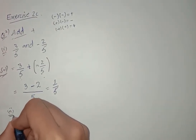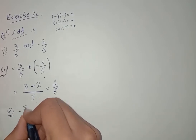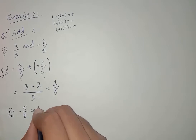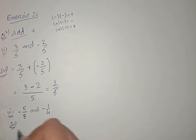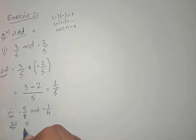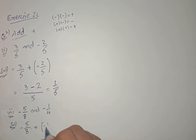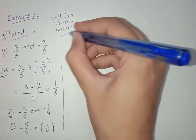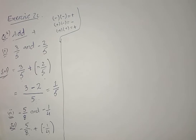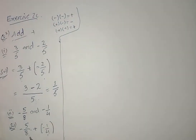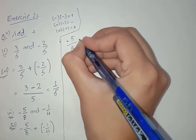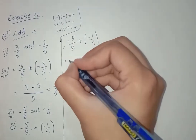Now move towards the next question, which is question number 2 part 2: minus 5 by 8 and minus 1 by 4. We have to add these. Minus 5 by 8 plus minus 1 by 4. As the denominators are not the same, we have to make the denominators the same, or we have to take the LCM.